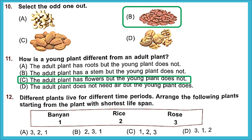Question 12: Arrange the following plants starting from the plant with the shortest life span. A banyan tree can live for hundreds of years; a rose plant lives for a few years; a rice plant has a life of only a few months. The right order is option B: rice, rose, then banyan.